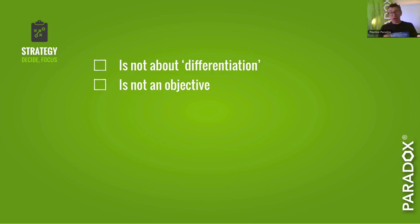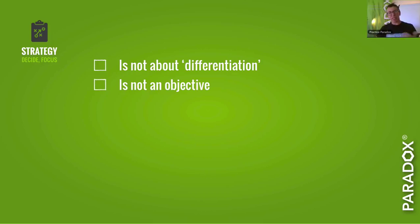Strategy is not an objective. If that seems obvious, consider this: we survey accounting firms frequently, and when we ask what their strategy is, more than 90% of the time the answer is not a strategy — it's an objective. It's a statement of an outcome in terms of percentage growth or number of clients. That is not a strategy — that's where you want to get. The strategy is how you're going to get there.